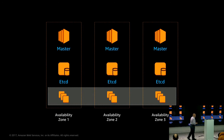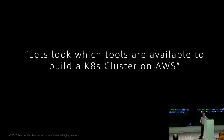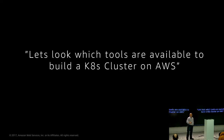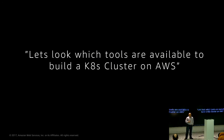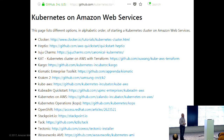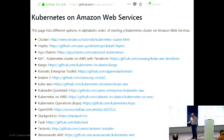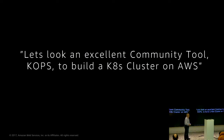Worker nodes are usually in an autoscaling group — they can add or remove instances as needed. If you want to start a Kubernetes cluster on AWS, there's actually a list of 16 projects on GitHub available for that. The most popular community tool is called kops — an excellent community tool to build a cluster on AWS.